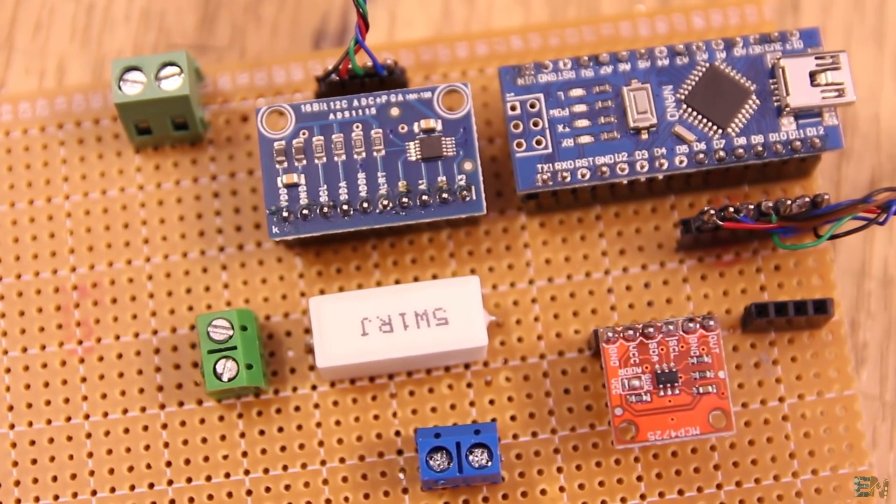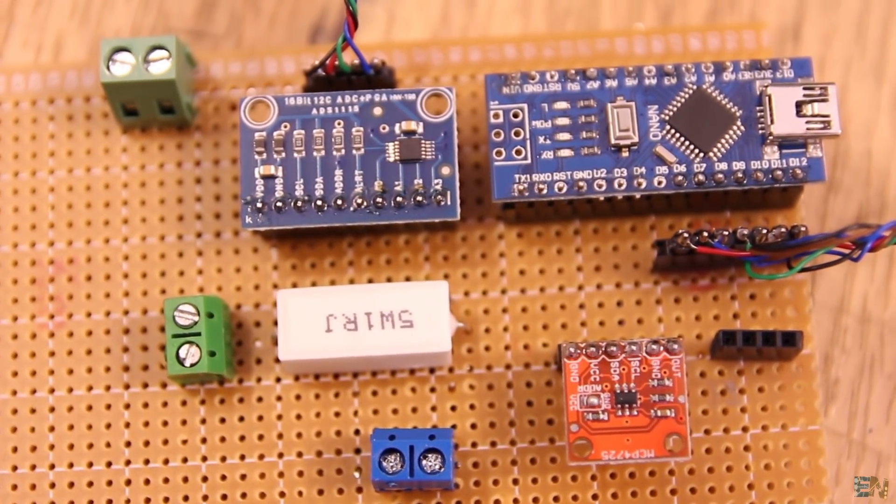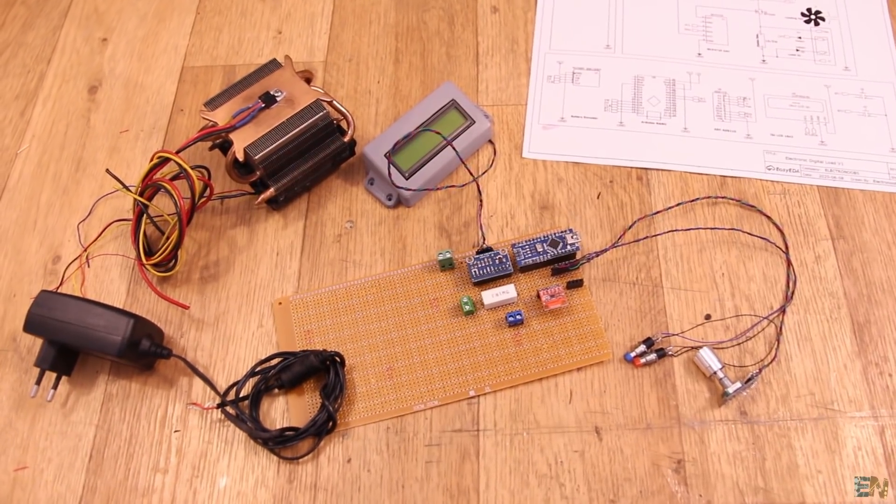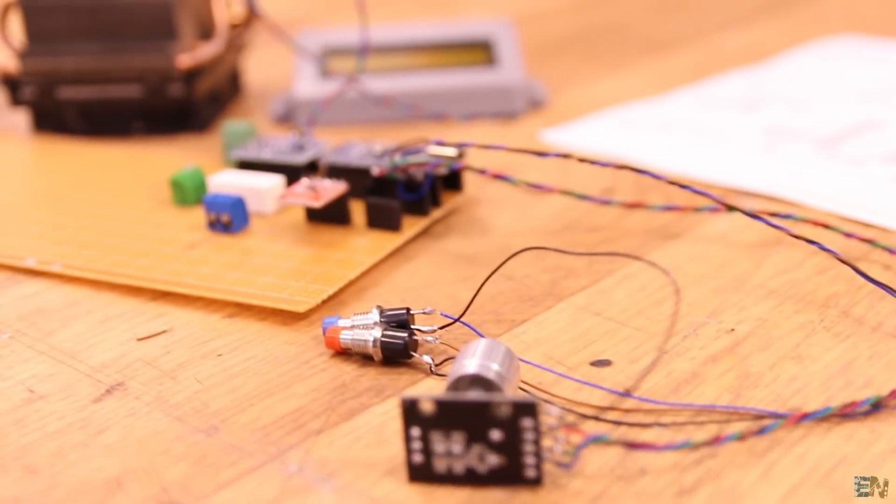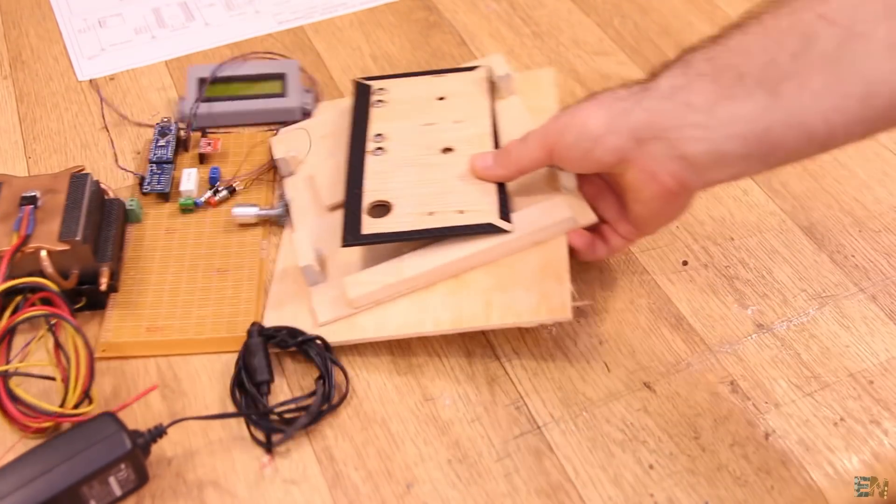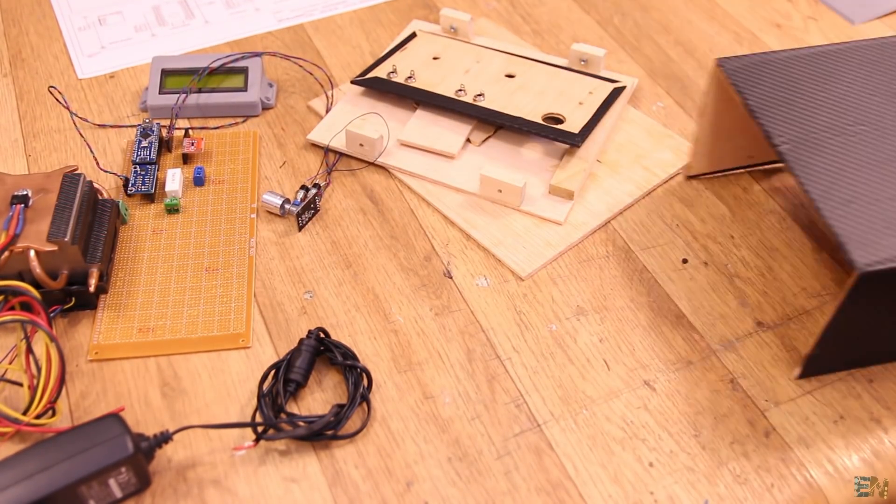So this is the final board that has the shunt resistor, ADC and DAC modules and the Arduino. I solder some wires to the rotary encoder and push buttons. Now that we have each part ready, we need a case to fit everything inside.